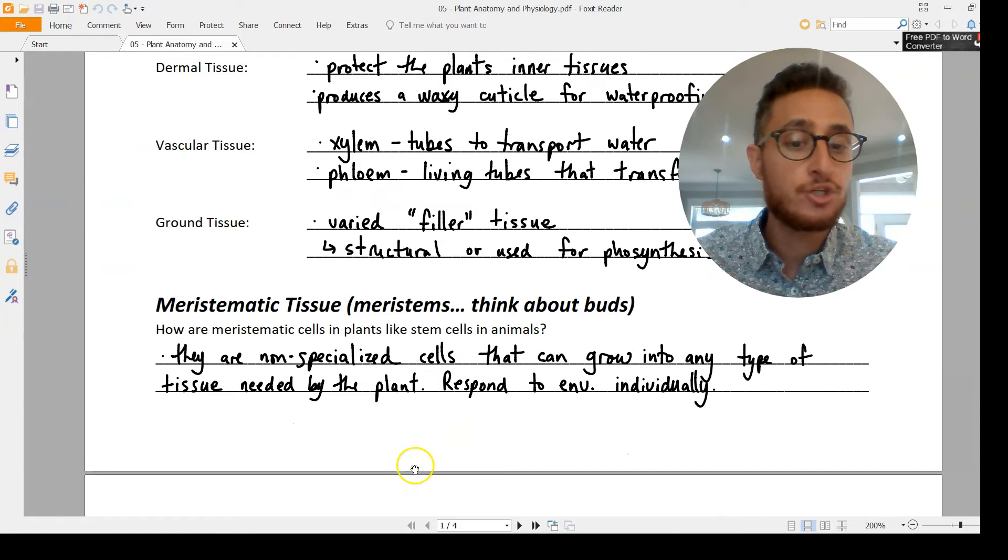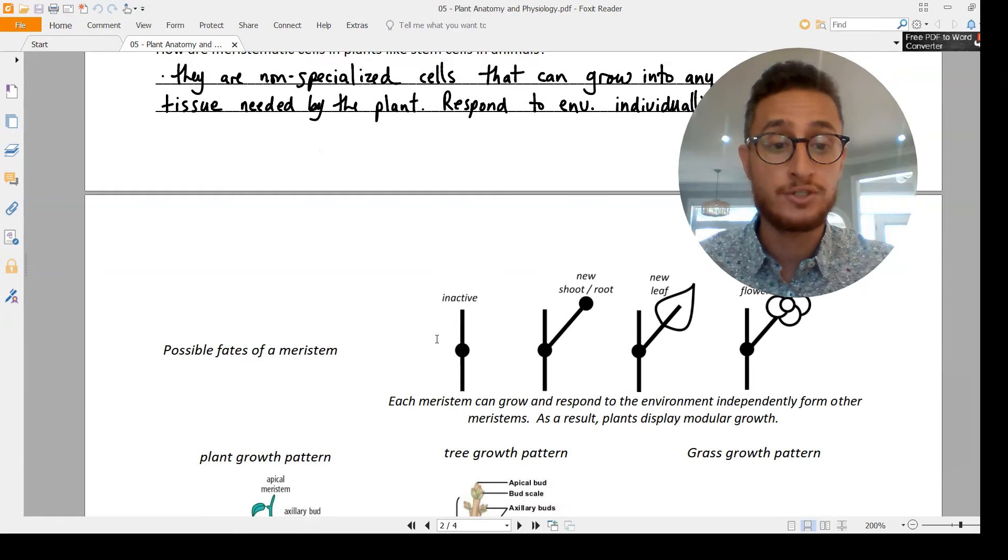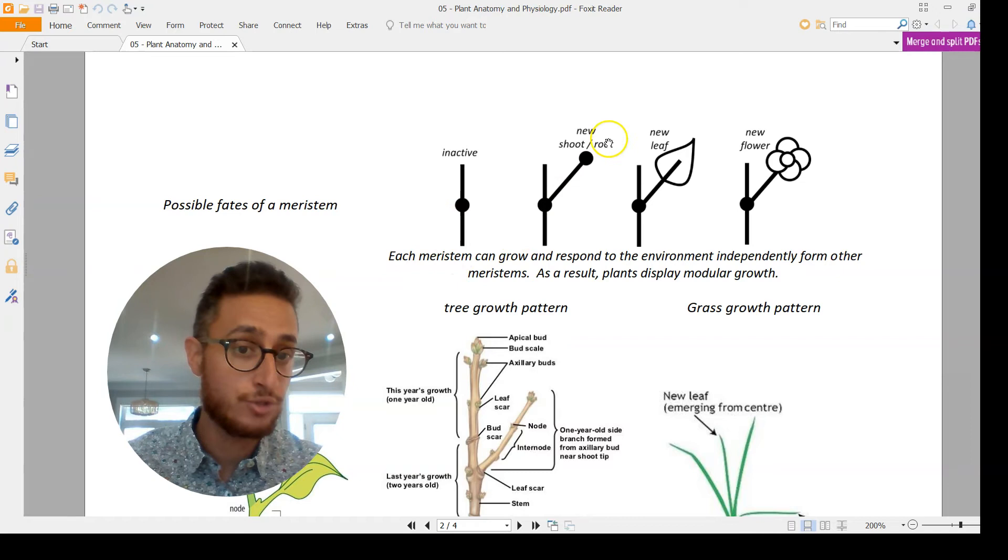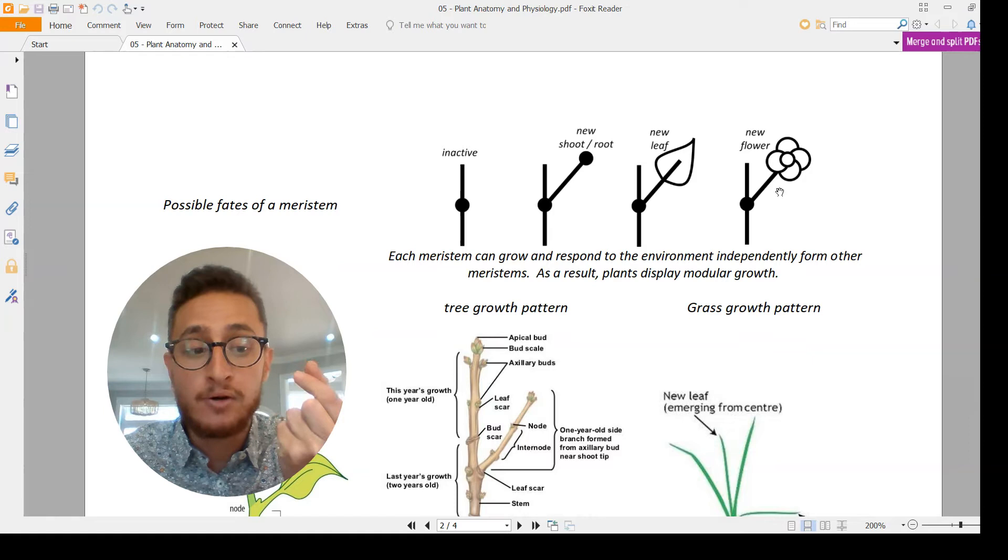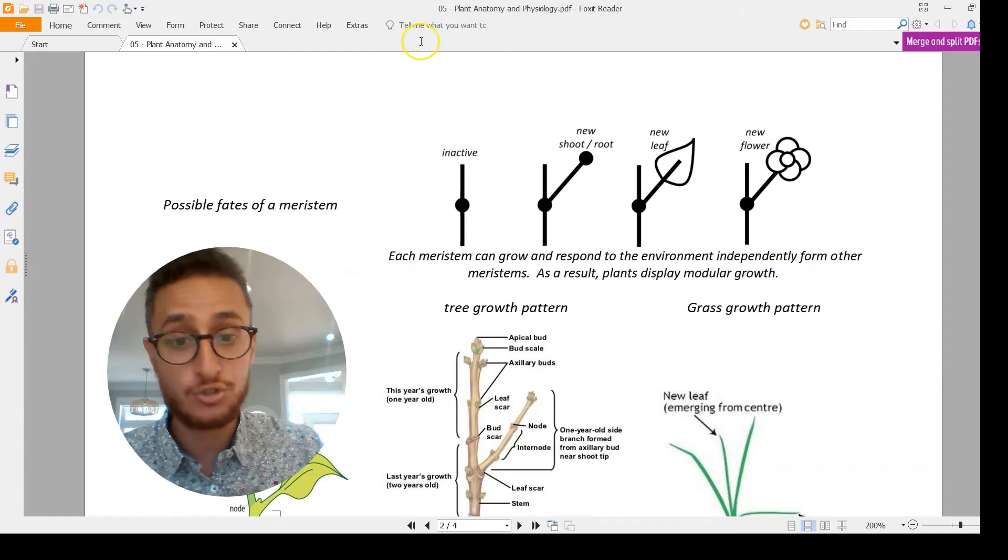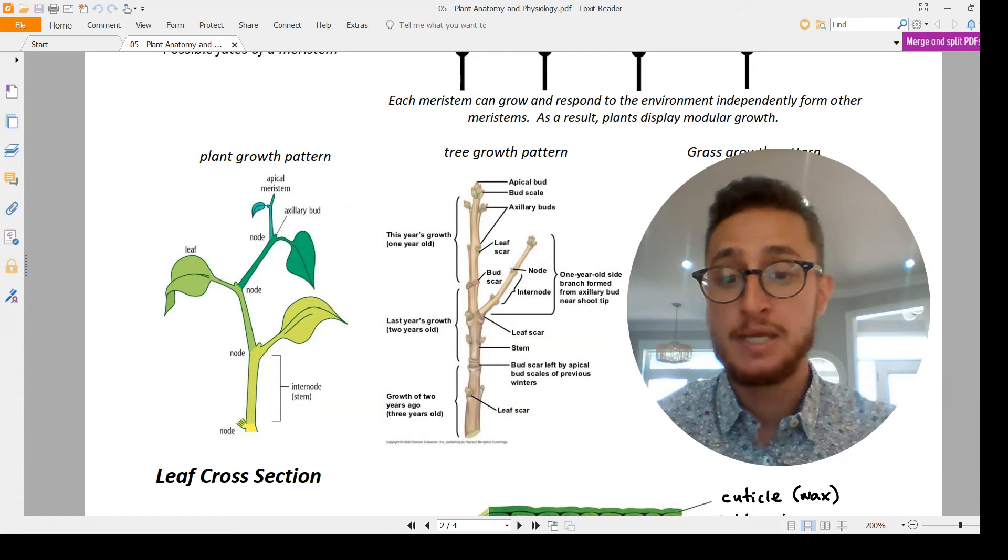The last type of tissue worth mentioning is meristematic tissue. When I think of a meristem, I think about buds. These are just the growing tips, non-specialized cells that are going to be able to grow into whatever the plant wants. They can stay inactive if conditions are not there, or they can grow new shoots, roots, leaves, or flowers. Two individuals with the exact same DNA, two cloned plants even side by side, may look very different from each other as their individual buds and meristems respond differently to what's going on in the environment.